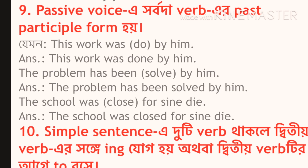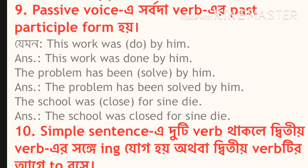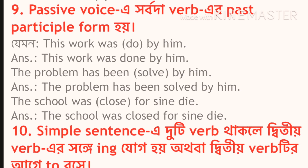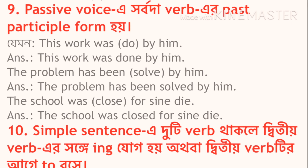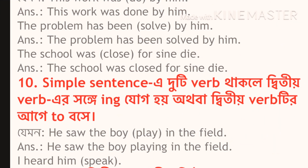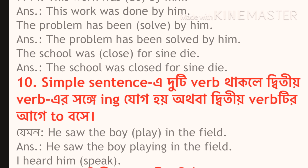For example, rule number 9: 'This work was done by him,' 'The problem has been solved by him,' and 'The school was closed.' Now let's look at a simple sentence: 'He saw the boy play in the field.' So 'saw' and 'play' are the key verbs here. The verb form to use after a causative or perceptive verb like 'saw' is the base form: 'play.'